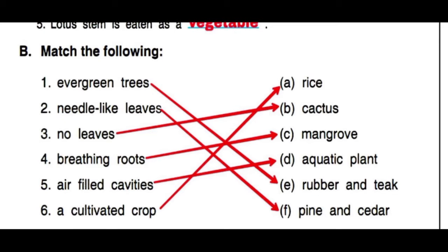Third is no leaves — we know that cactus have no leaves. Cactus ke leaves spines mein, katon mein convert ho jaate hain. Fourth is breathing roots — breathing roots are seen in mangrove trees.